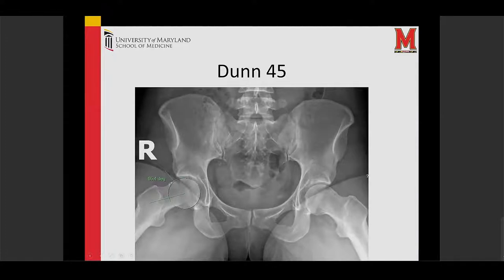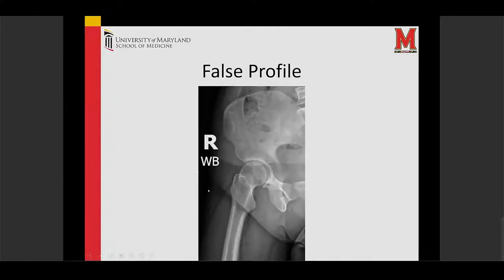This is how you measure how much extra bone there is — it's called the alpha angle. The ball is supposed to be perfectly round; bone sticking outside the round ball is the abnormal bone. The false profile is the third view. So the three views are AP pelvis, a DUN-45, and a false profile — this rotates the pelvis to give us a side view, showing the front of the socket. Those are the three x-rays that are best for younger people with hip pain.